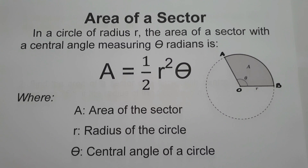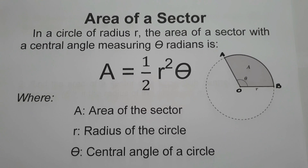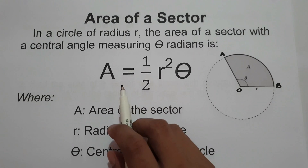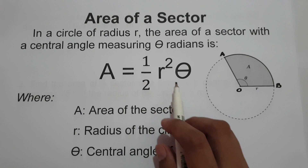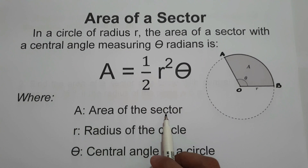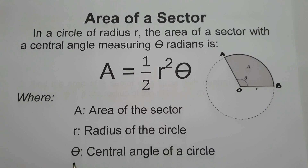In this video, we are going to talk about how to find the area of a sector. When we say area of the sector, in a circle of radius r, the area of a sector with a central angle measuring radians is: area equals one-half r squared theta, where A is the area of the sector, r is the radius of the circle, and theta is the central angle of the circle.